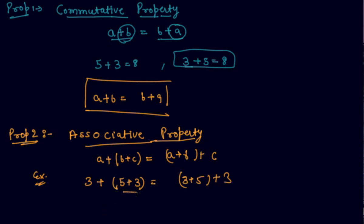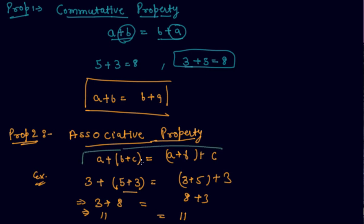First I will solve the bracket. On the left-hand side, solving the bracket gives 8, and the total result is 11. On the right-hand side, 3 plus 5 is 8, and 8 plus 3 also equals 11, which always equals the left-hand side. So the property states that a plus b plus c equals a plus b plus c — after adding any two numbers first, adding the third gives the same result.